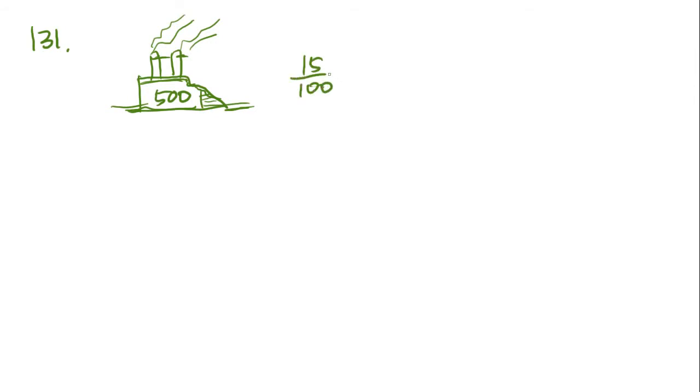I like to set up a ratio. So, 15 over 100% is equal to x over 500. Cancel the zeros. And you get... Well, you cross multiply. 5 times 5 is 25. 5 times 1 is 5. Plus 2 is 7. So, 75 women are in the factory right now.